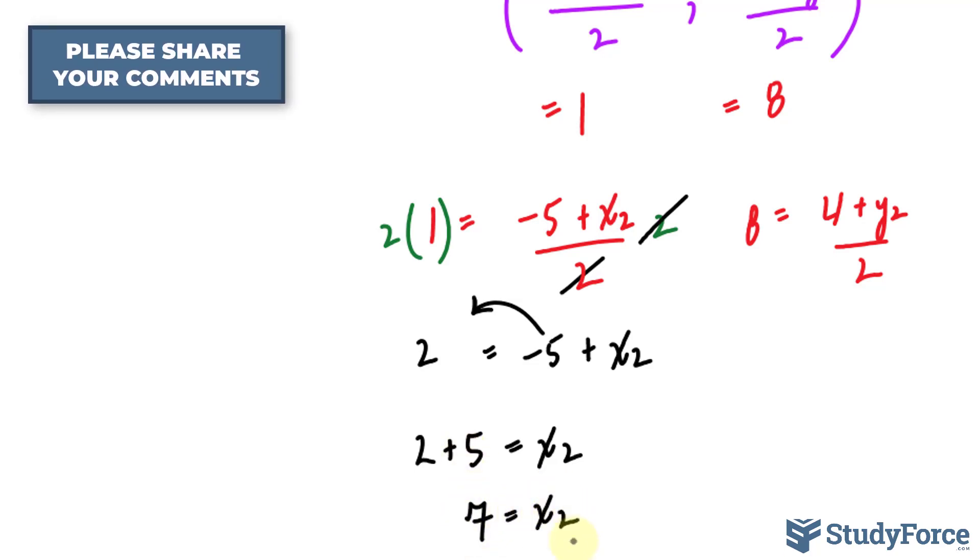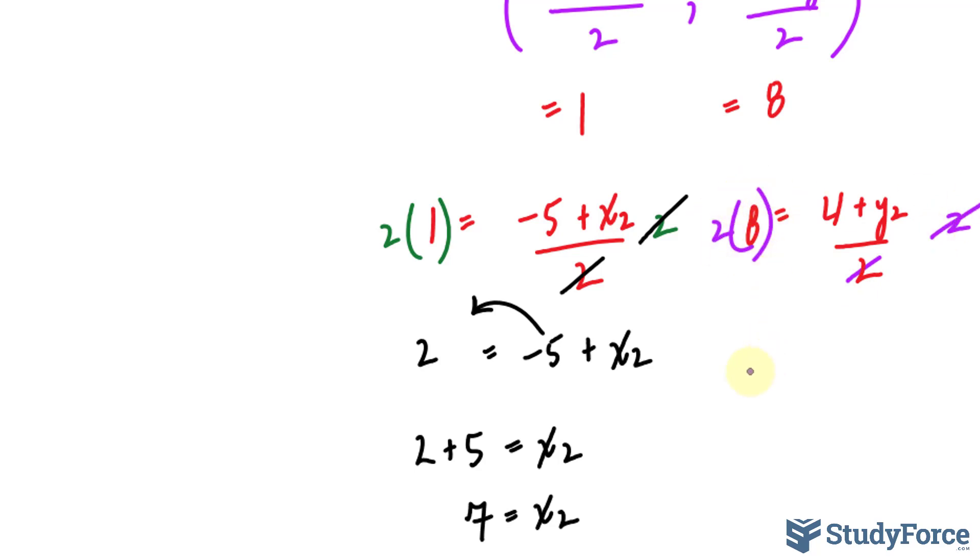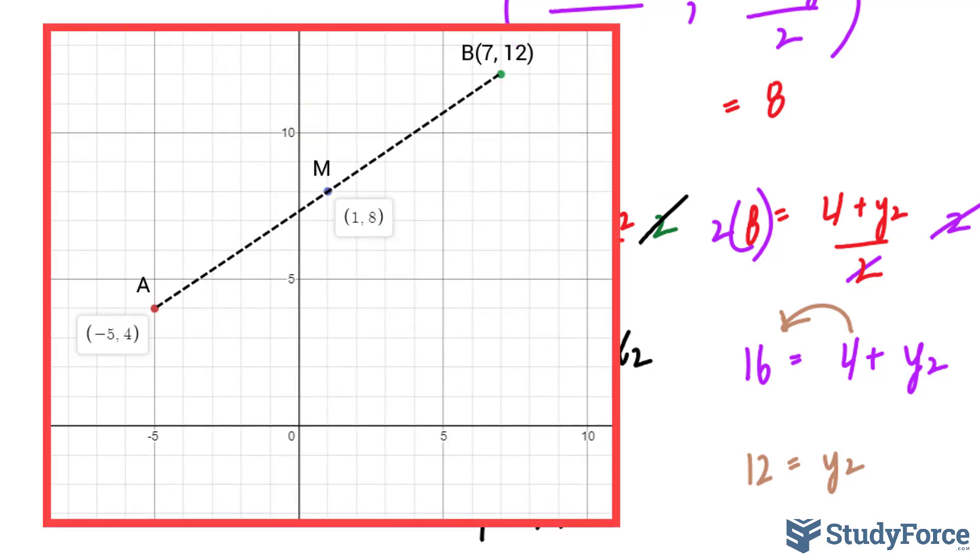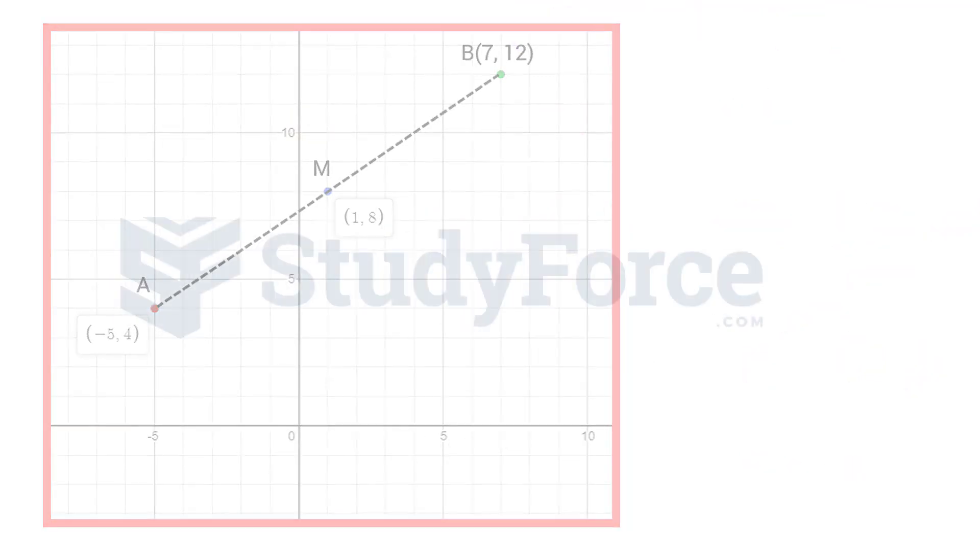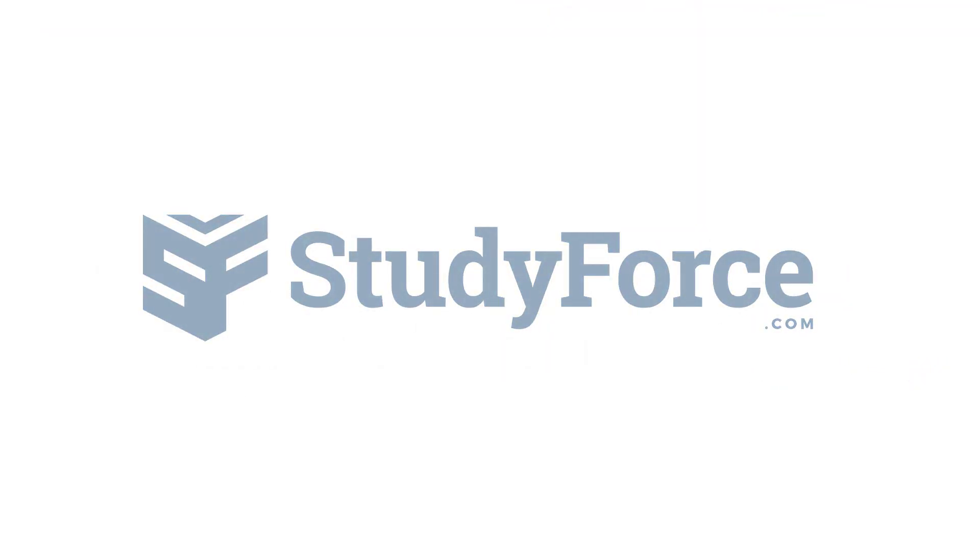That's the x coordinate of the endpoint. To get the y coordinate, we'll repeat the process, multiply both sides by 2, and we get 16 is equal to 4 plus y sub 2, bringing that positive 4 over makes it negative, 16 minus 4 is 12, and that is the y coordinate. Therefore, our endpoint B has the coordinates 7 and 12, and now you can see that visually on the screen.